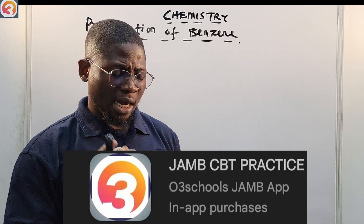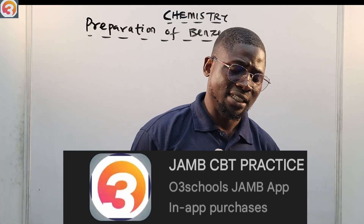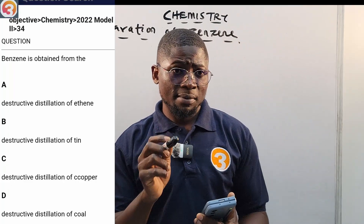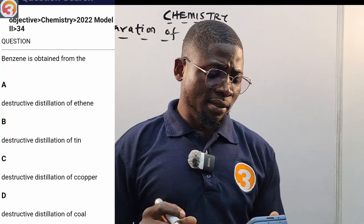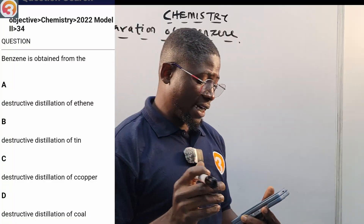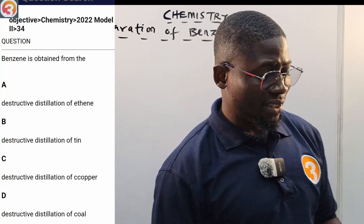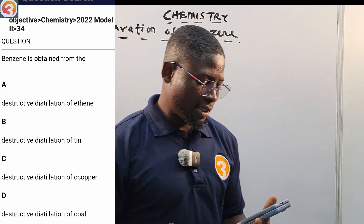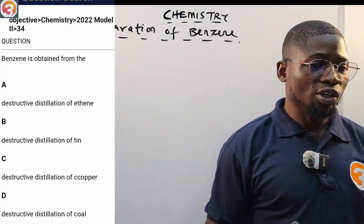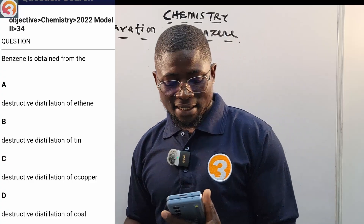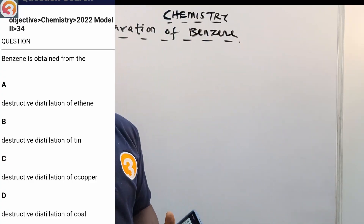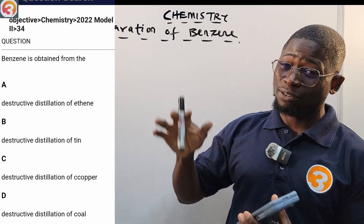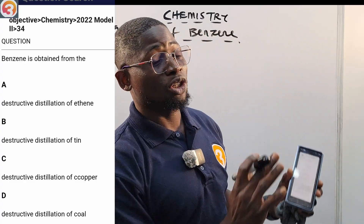Let us see a question from the app. This is a 2022 question number 34: 'Benzene is obtained from — A: destructive distillation of a teen, B: destructive distillation of tin, C: destructive distillation of copper, D: destructive distillation of coal.' At the end of the class you'll be able to answer this question and many more about the preparation of benzene.